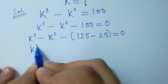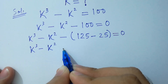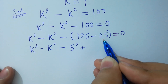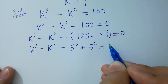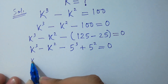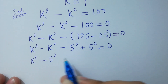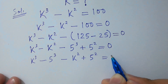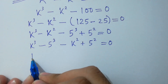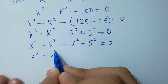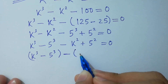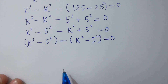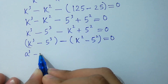So we rewrite: k cubed minus k squared minus 100 becomes k cubed minus 5 cubed minus k squared plus 5 squared equals 0. Rearranging, we get k cubed minus 5 cubed minus (k squared minus 5 squared) equals 0.